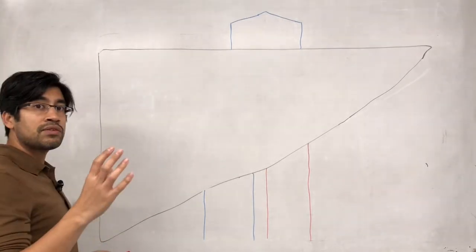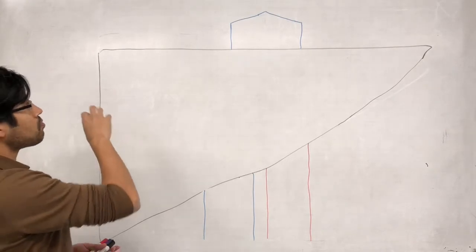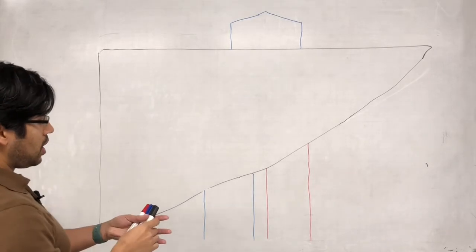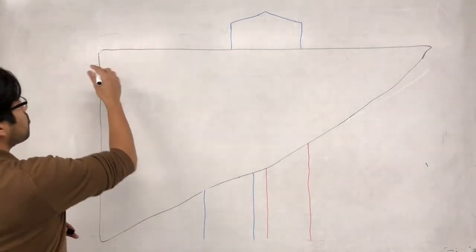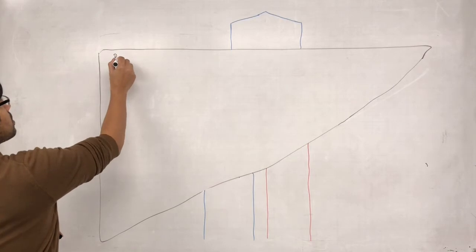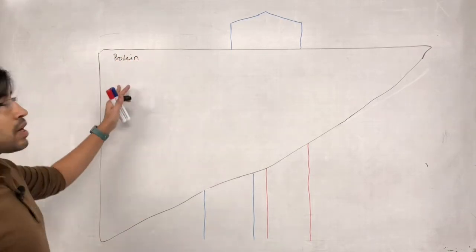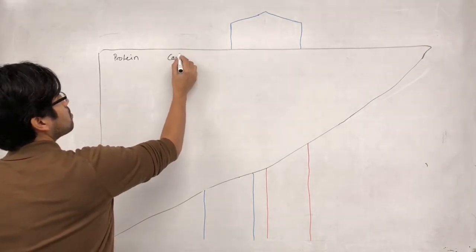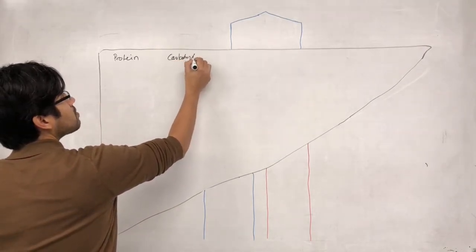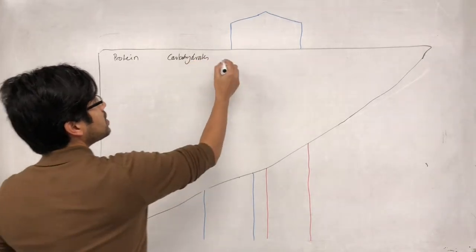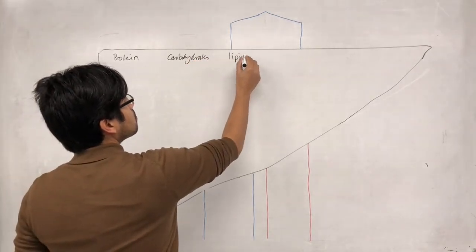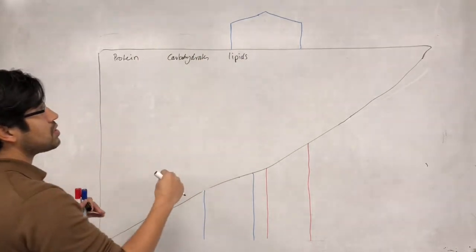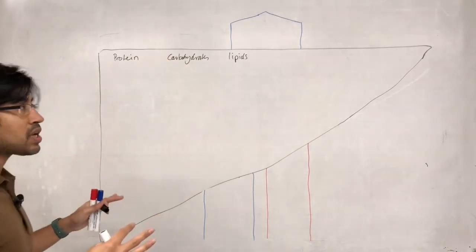Quite a lot of the liver's function that we are going to look at is to do with dealing with the nutrients that are coming from the digestive system. So one of those things — let's just categorise these — it deals with proteins in a certain way, it will deal with carbohydrates, it will deal with lipids, fatty acids that have come from digestion.